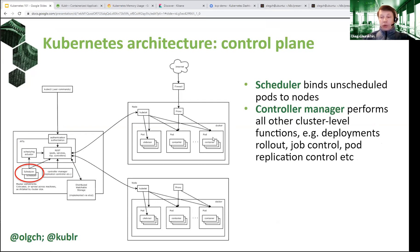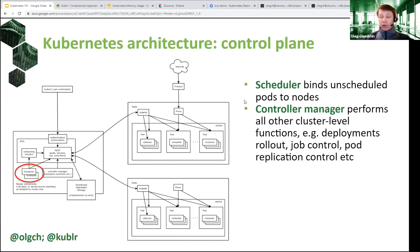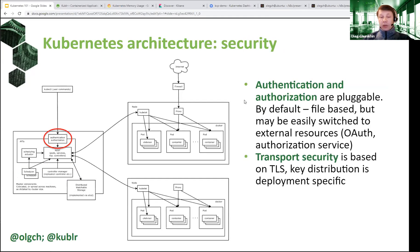Other master components include scheduler and controller manager. The scheduler implements a core functionality of Kubernetes related to scheduling pods to worker nodes. When a client creates a new pod, in most cases the client does not specify on which node this pod should run — that's when the scheduler starts working and decides where to put that pod. The controller manager implements the logic behind controllers in Kubernetes. We'll see in a few slides how it all works together.